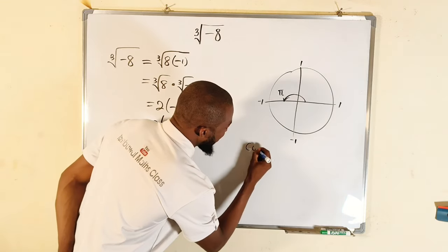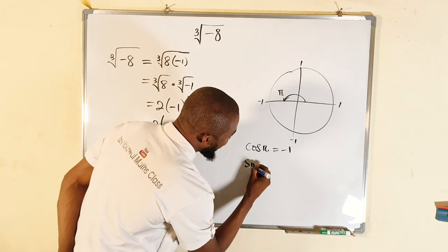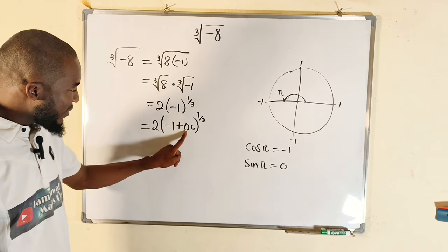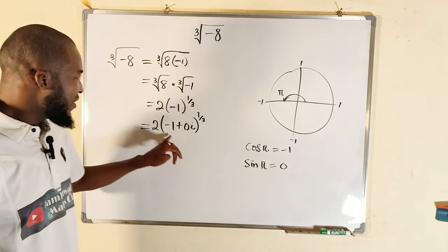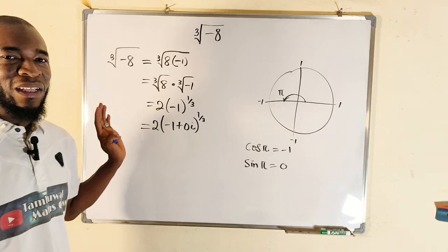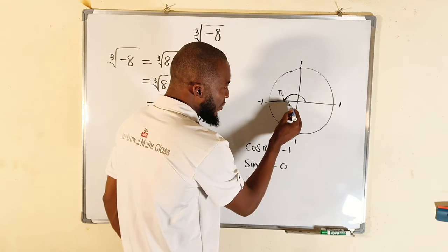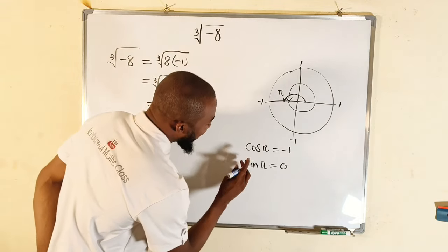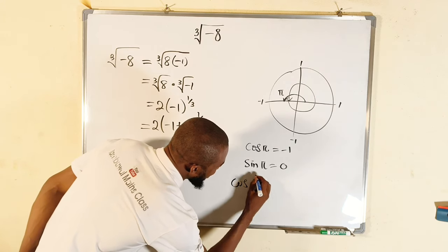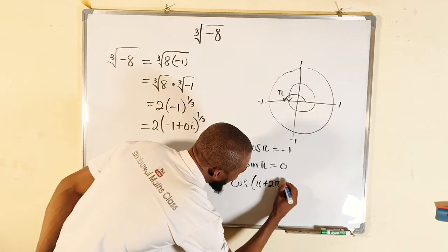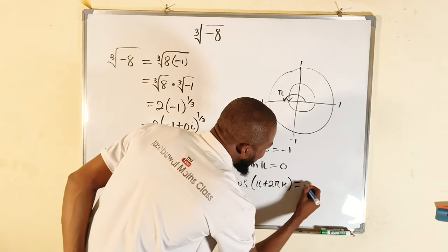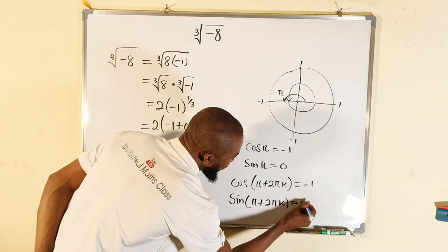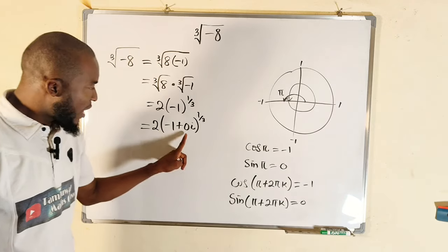We recall that cosine(π) = −1 and sine(π) = 0, which means we can replace negative one with cosine(π) and zero with sine(π). So negative one + 0i becomes cosine(π) + i·sine(π). Since adding a complete revolution still returns to the same point, we can add multiples of 2π: cosine(π + 2πk) + i·sine(π + 2πk), where k is an integer.